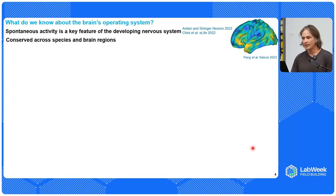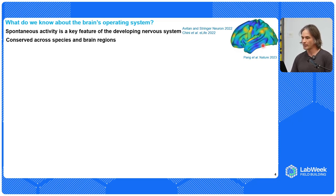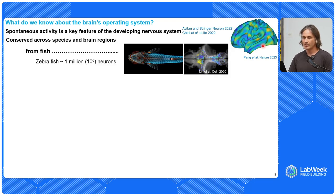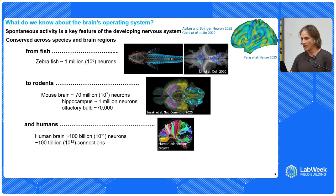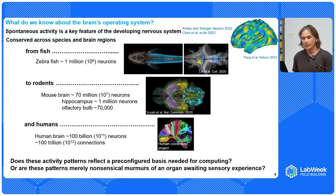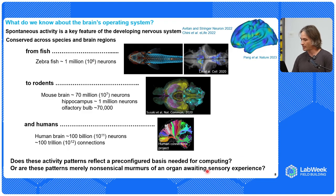Spontaneous activity is a key feature of the developing central nervous system. It's conserved across species and brain regions. Here you can see resting state fMRI in a human brain. These features are conserved from fish to rodents. The mouse brain has 70 million neurons, and the human brain has roughly 100 billion neurons with over 100 trillion synaptic connections. Do these spontaneous emergent activity patterns reflect a pre-configured basis needed for computing, or are these patterns merely nonsensical murmurs of an organ awaiting sensory experience? These are some of the questions we're really interested in answering.